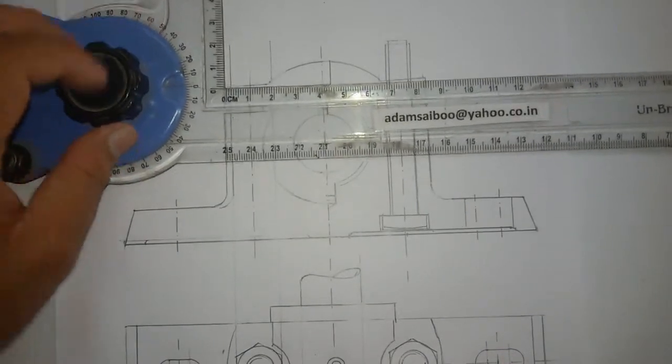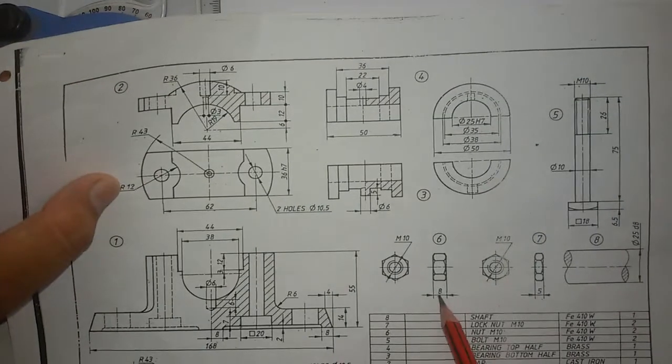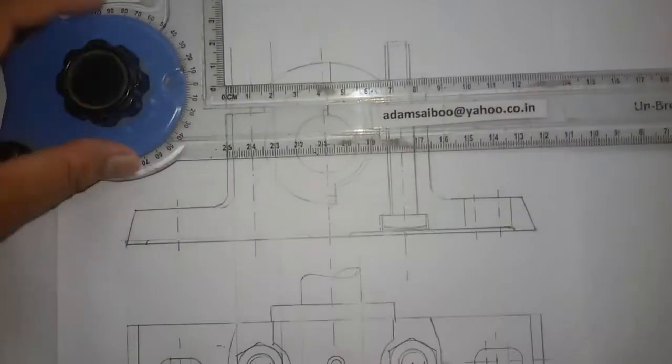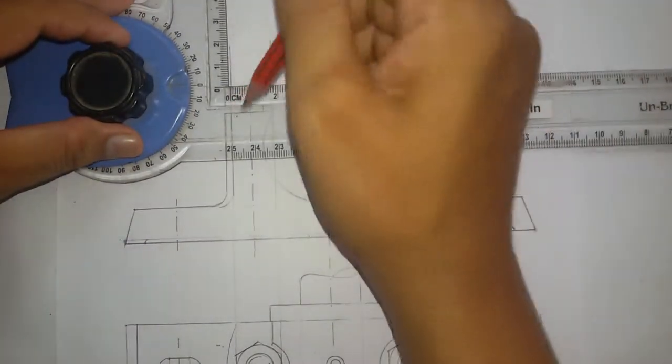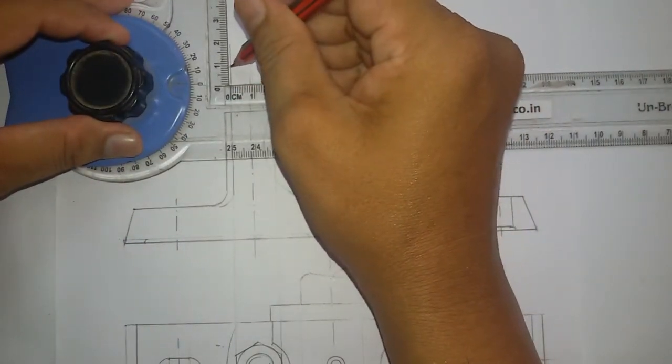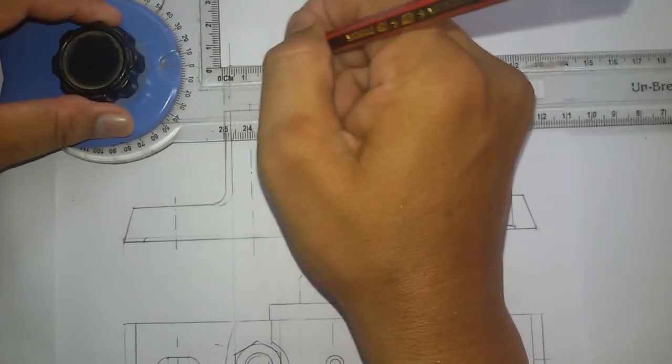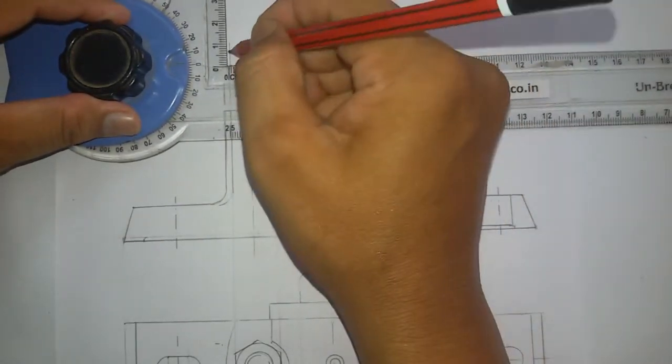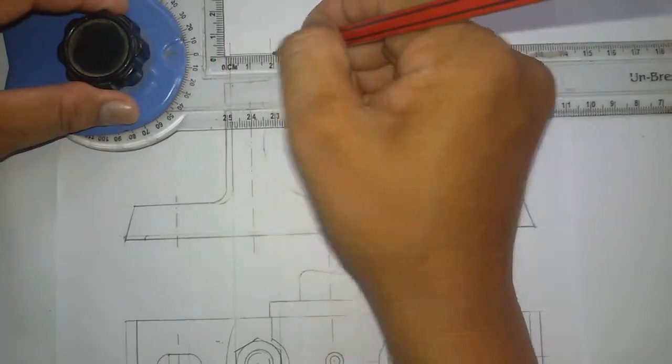The net thickness was given 8mm and the left hand thickness 5mm. From here you mark 8mm and draw a line. From here 5mm draw another line.